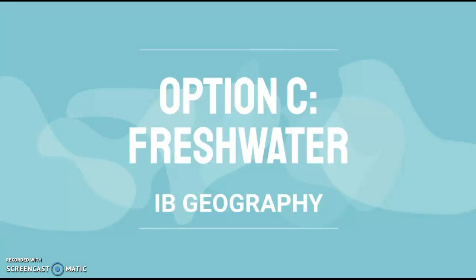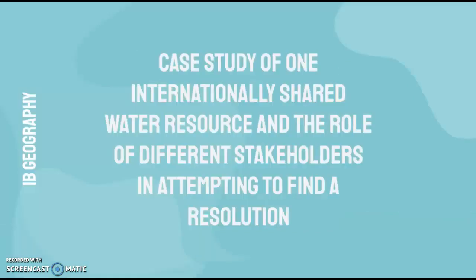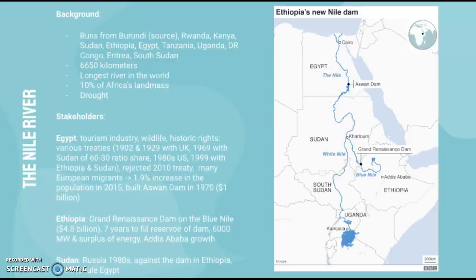Now we have Option C: Fresh Water for RB Geography. This is basically going to be a case study of one internationally shared water resource and the role of different stakeholders in attempting to find a resolution. A really debated source of water that has caused a lot of conflict is the Nile.